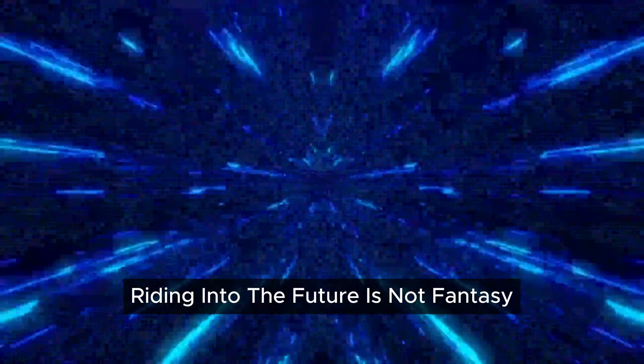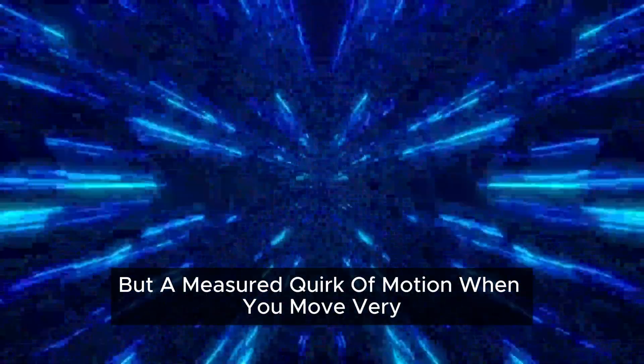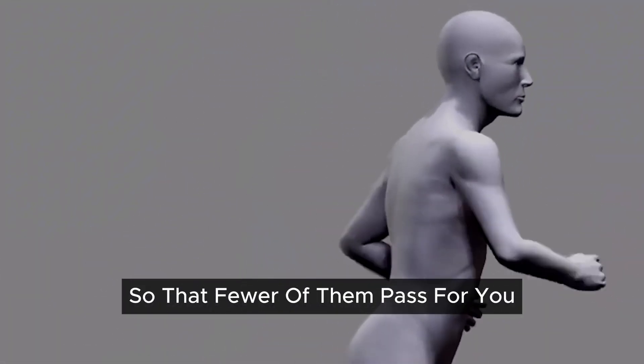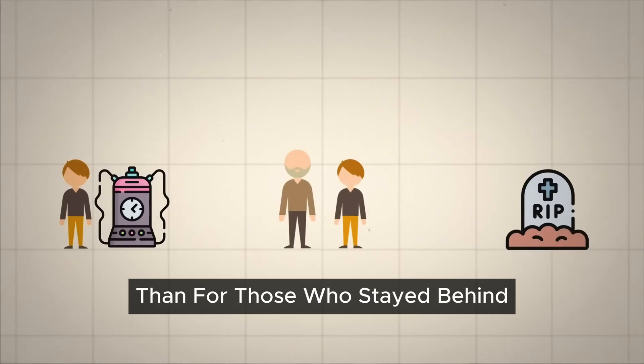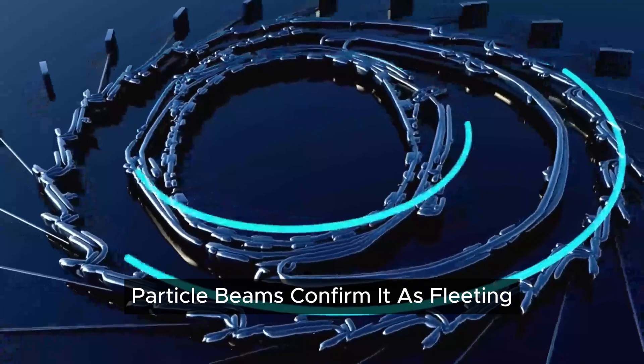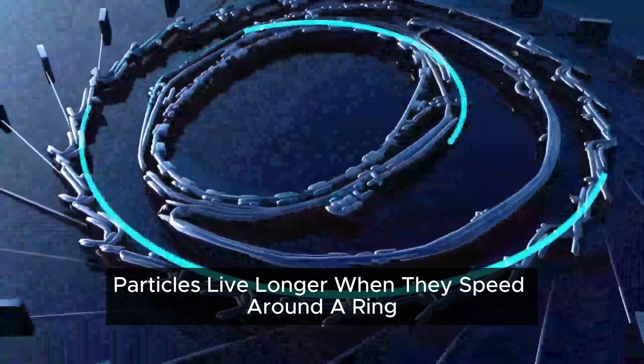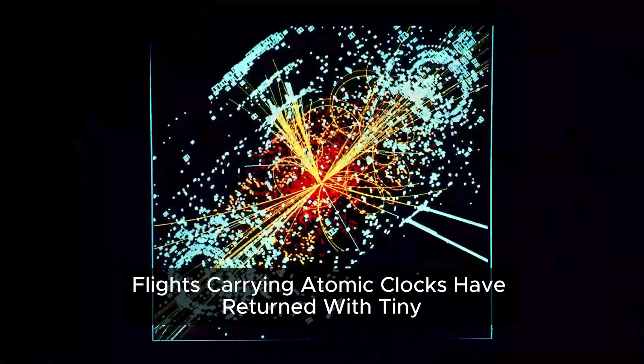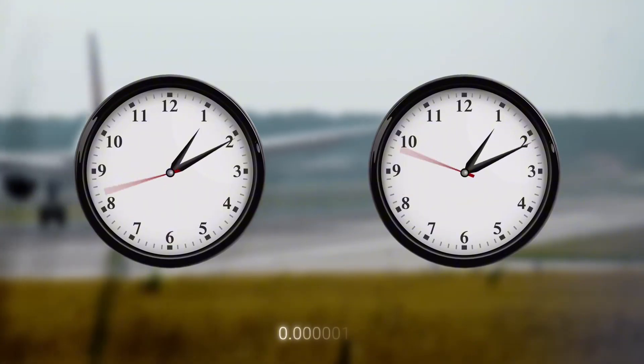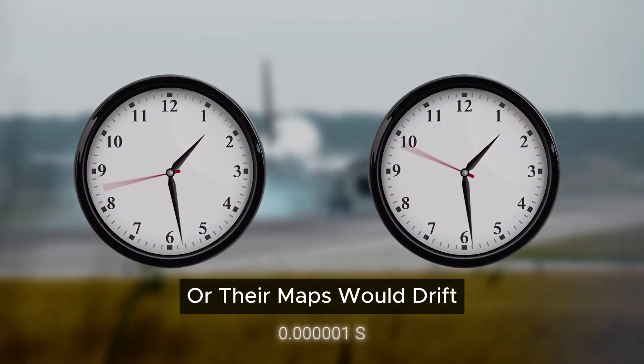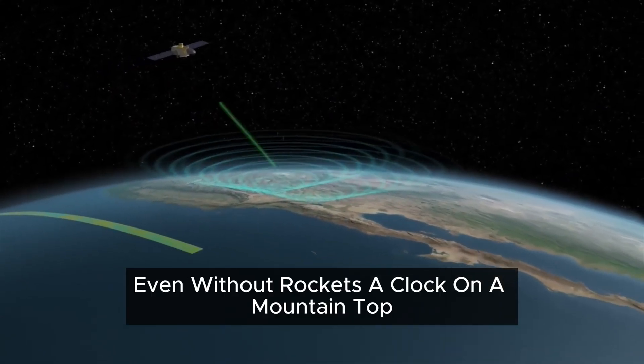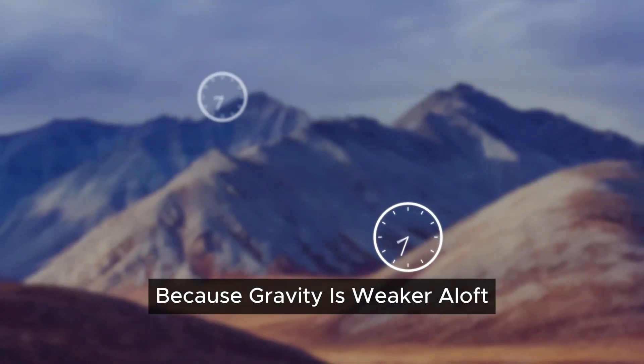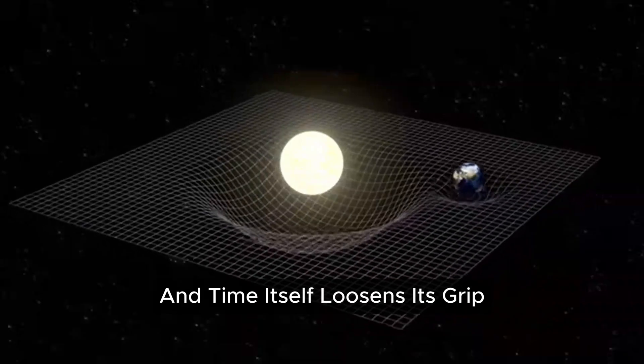Riding into the future is not fantasy, but a measured quirk of motion. When you move very fast, your personal seconds stretch so that fewer of them pass for you than for those who stayed behind. Particle beams confirm it, as fleeting particles live longer when they speed around a ring. Flights carrying atomic clocks have returned with tiny but clear offsets. Navigation satellites must be corrected, or their maps would drift. Even without rockets, a clock on a mountaintop slips ahead of one at sea level because gravity is weaker aloft, and time itself loosens its grip.